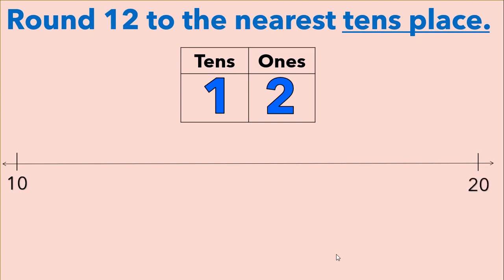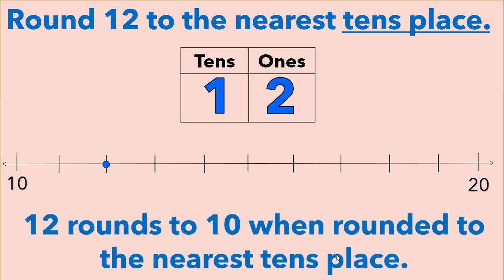We're going to divide our number line into ten equal parts, and we're going to plot twelve onto our number line. There are ten parts in between ten and twenty, so each part represents one, and we're going to put twelve on the second line. We can see here that twelve is closer to ten, so twelve rounds to ten when rounded to the nearest tens place.